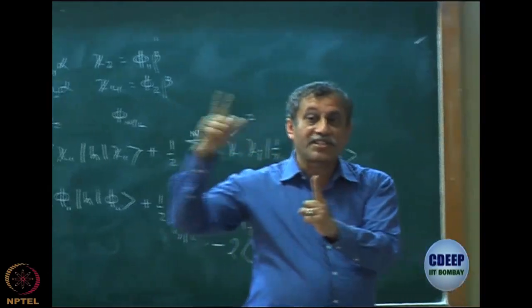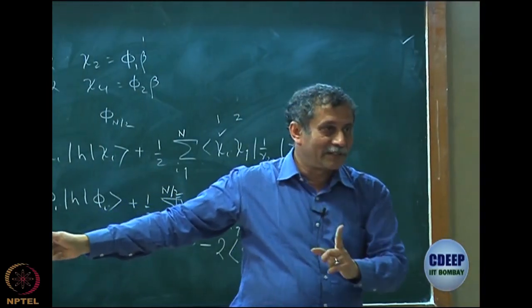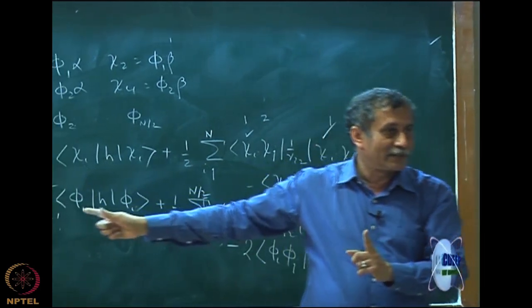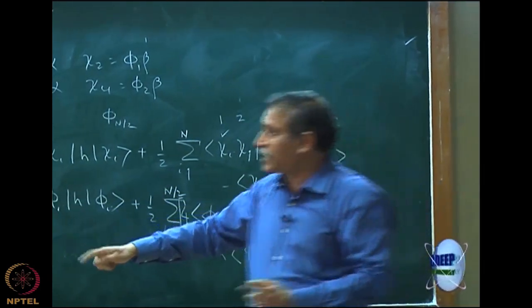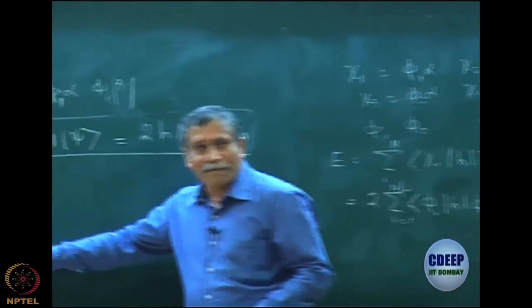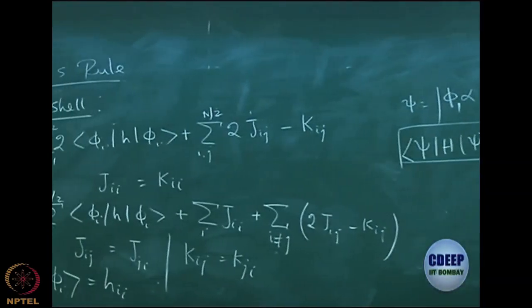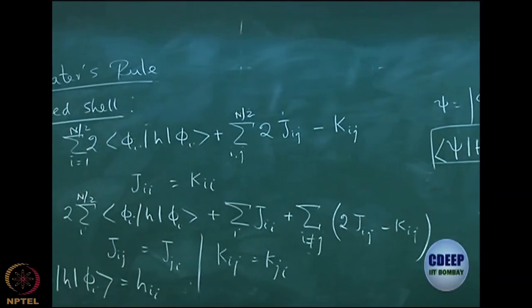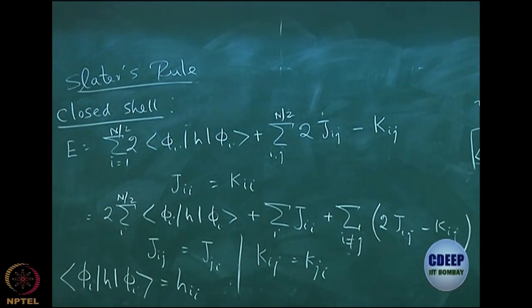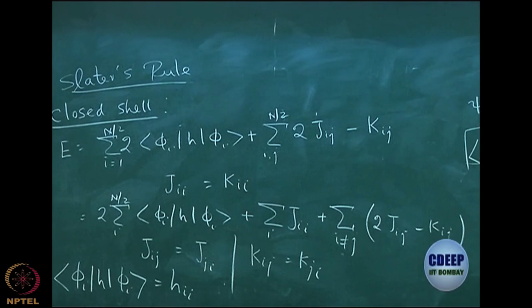Note that there is no exchange interaction here. There is no minus K_11 surviving. Actually there is a K_11 term, but unfortunately one of the J terms has cancelled it. So there is no exchange here — there is only Coulomb. Finally, what survives is only one Coulomb interaction.